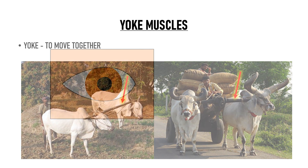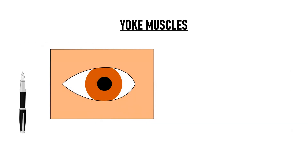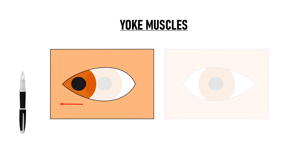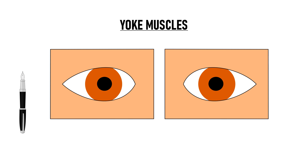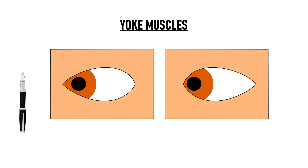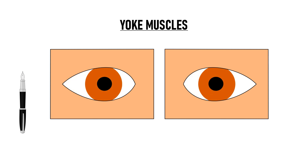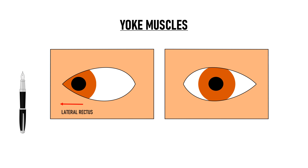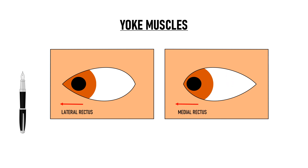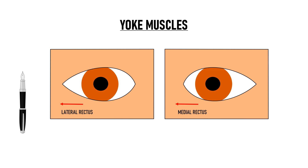They move together. Suppose I place this pen to the right side of the patient — he moves his right eye to look at the pen. Now, even though the pen is not in the field of vision of the left eye, we see that with the movement of the right eye, the left eye moves as well, and they move by the same degree. This is because the muscle moving the right eye to the right side — that is the right eye lateral rectus muscle — its yoke muscle is the left eye medial rectus muscle. So, when the right lateral rectus contracts, the left medial rectus also contracts, taking both eyes to the right side.